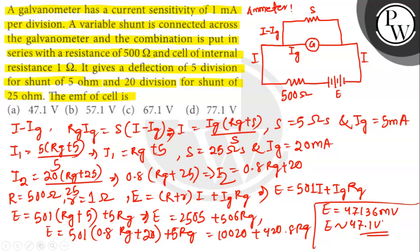So the EMF of the cell is 47.1 volt. Option number A is the correct answer. Thank you.